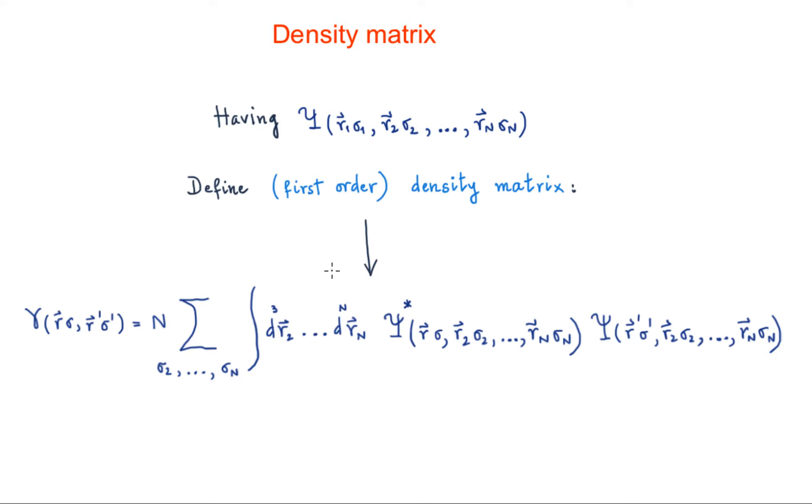So that's the density matrix. It's like making the scalar product of psi and psi, but here in this scalar product we are not doing the integration over r1 and we are not considering the summation on sigma 1.